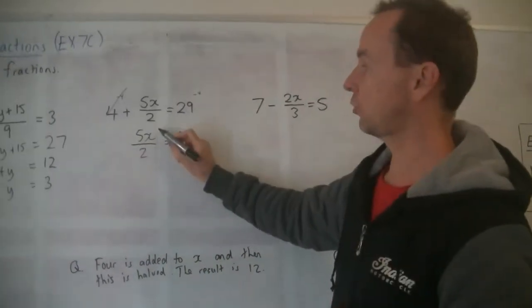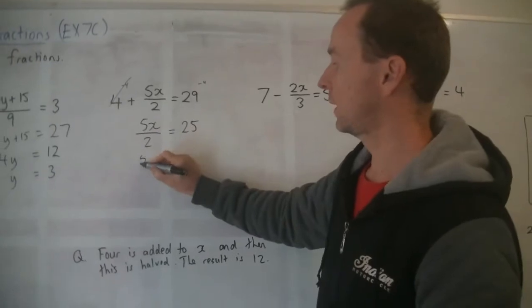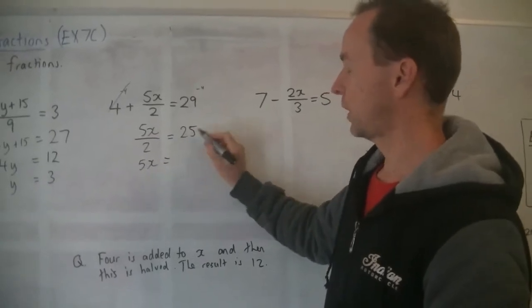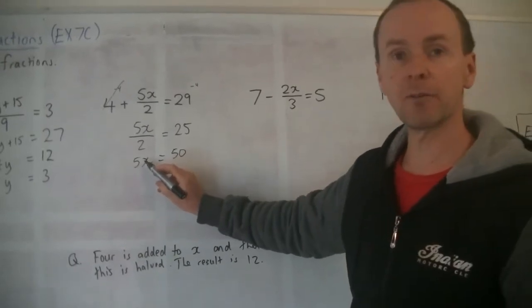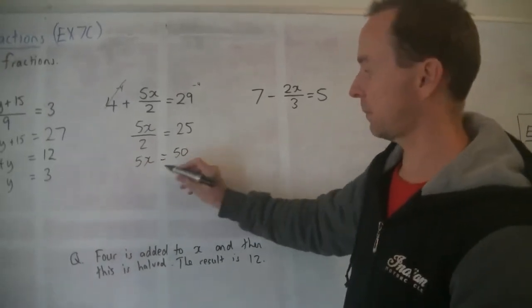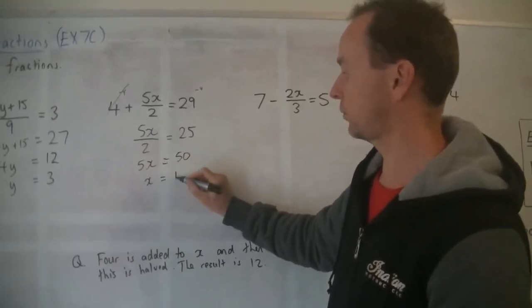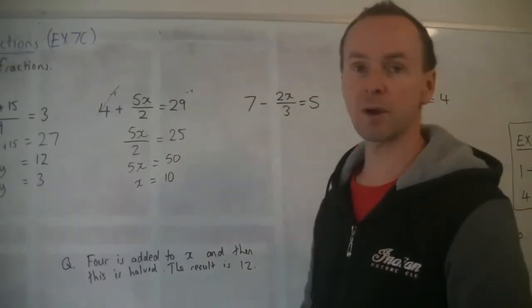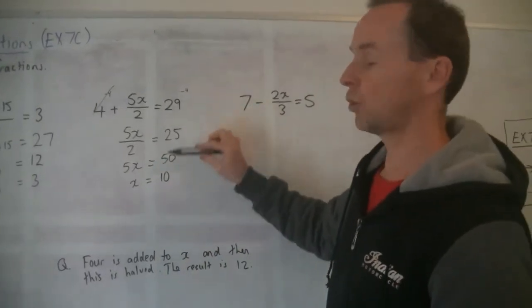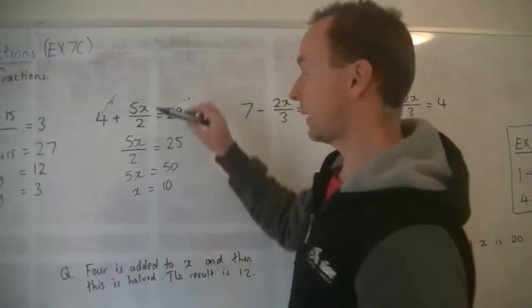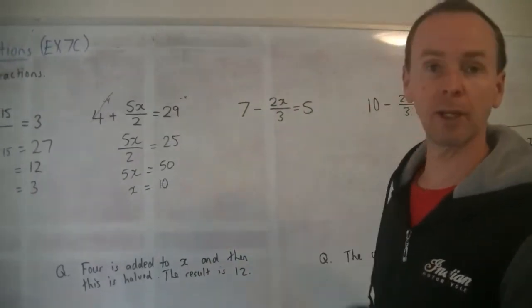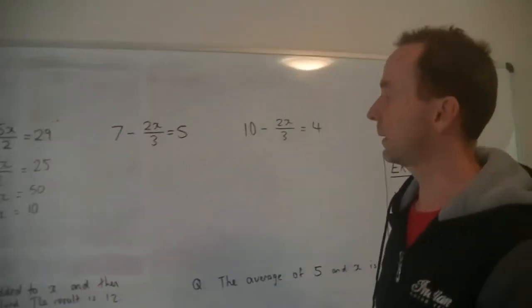Now this is divided by 2, so you times 2 times 2. You get 5x equals 25 times 2 is 50. That's times by 5. What's the opposite of that? Divide by 5, divide by 5, and you get x equals 10. And there's our answer. Step by step, you do one step at a time. Your workings out should be nice and neat, going down the page, the equal sign directly below each one above it each time.